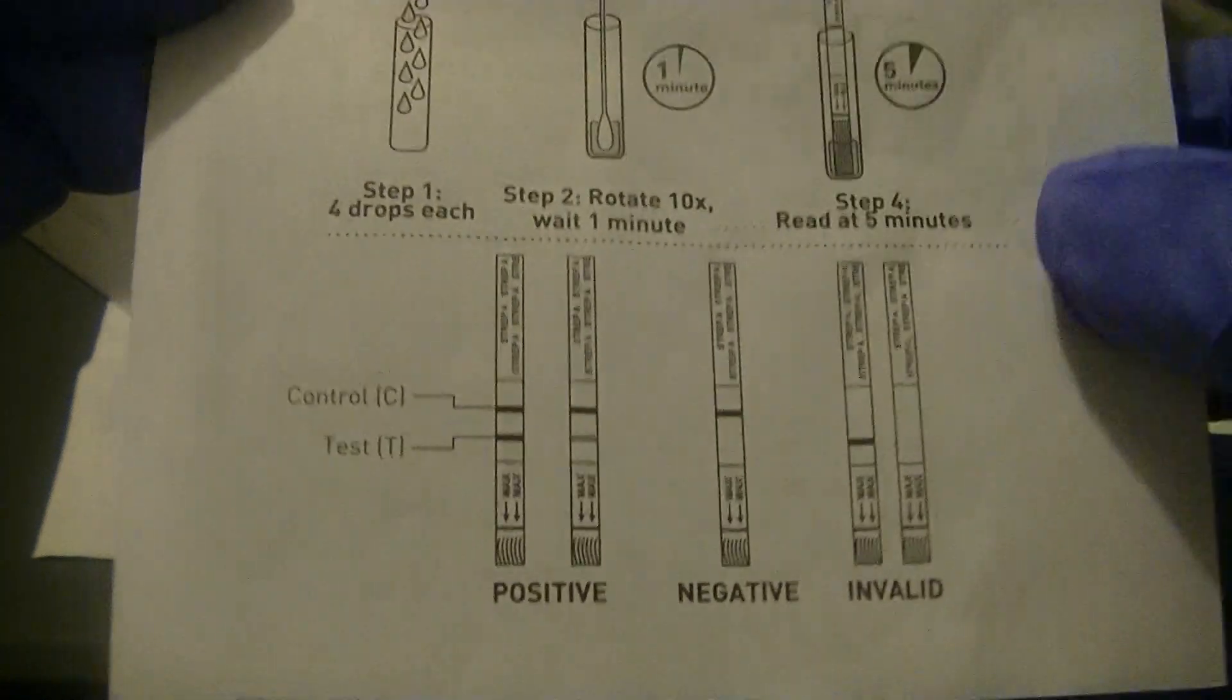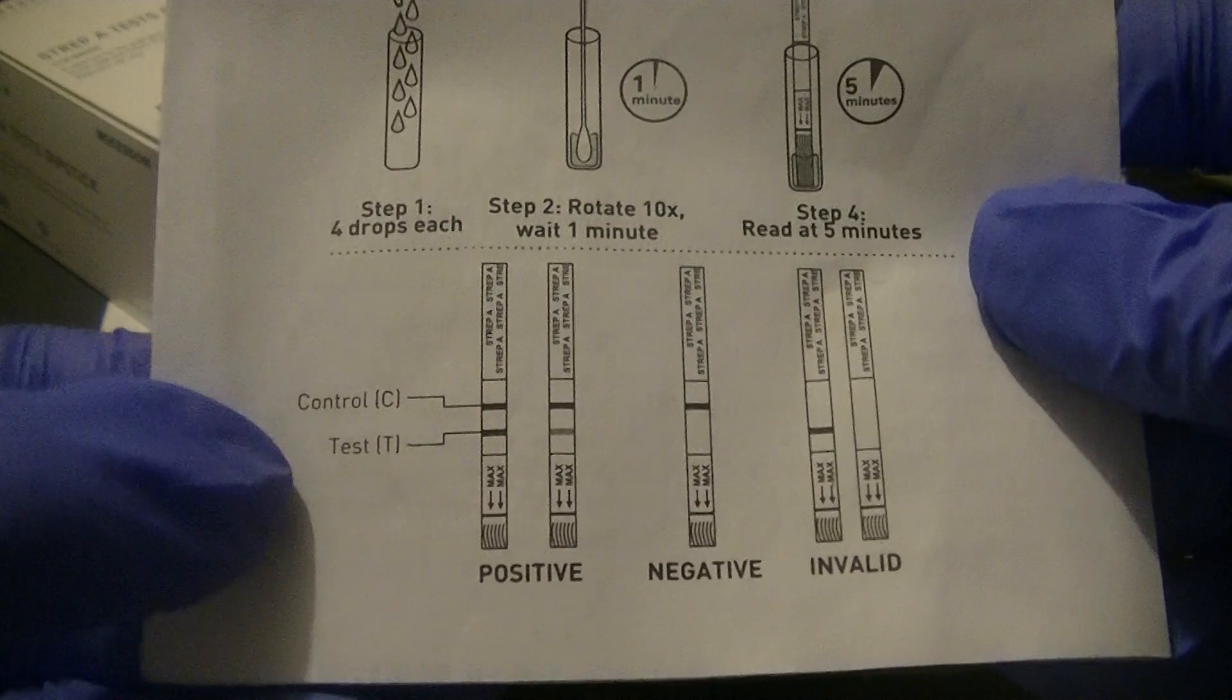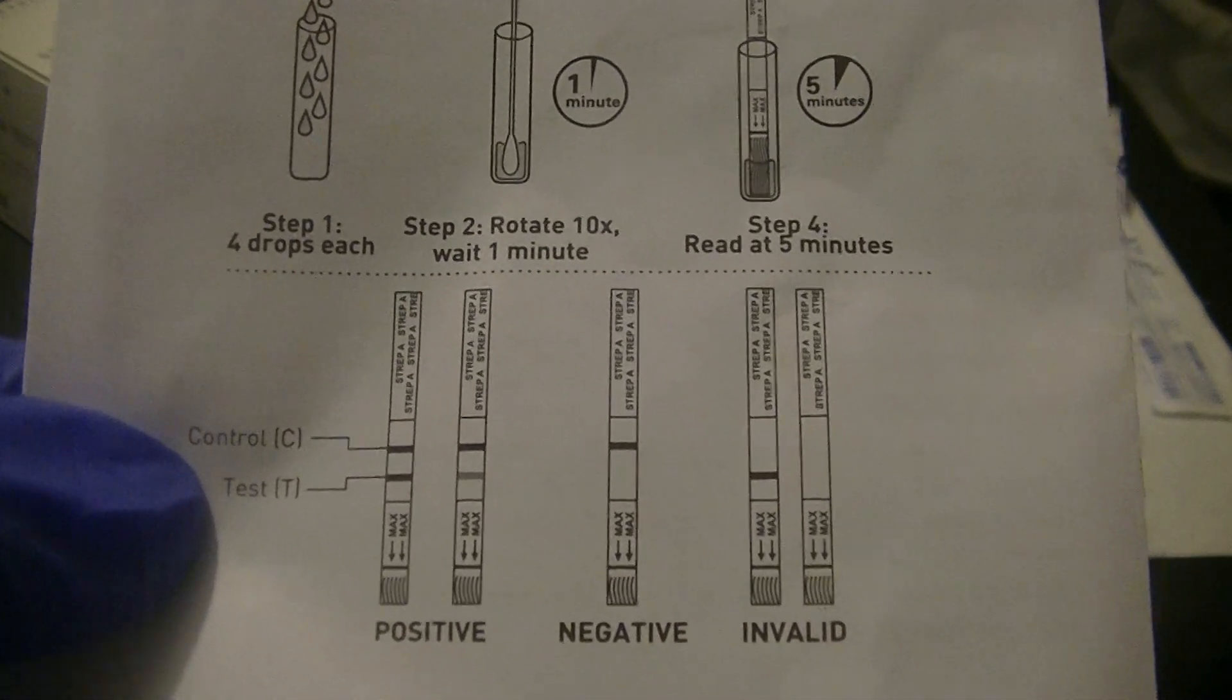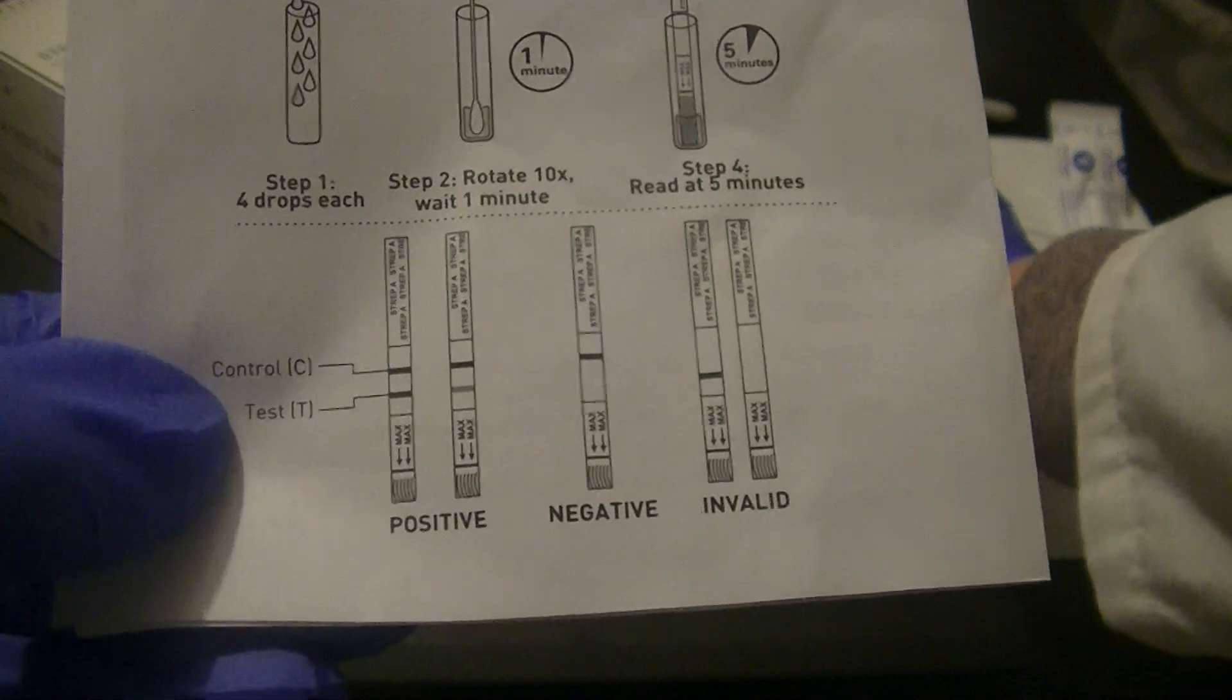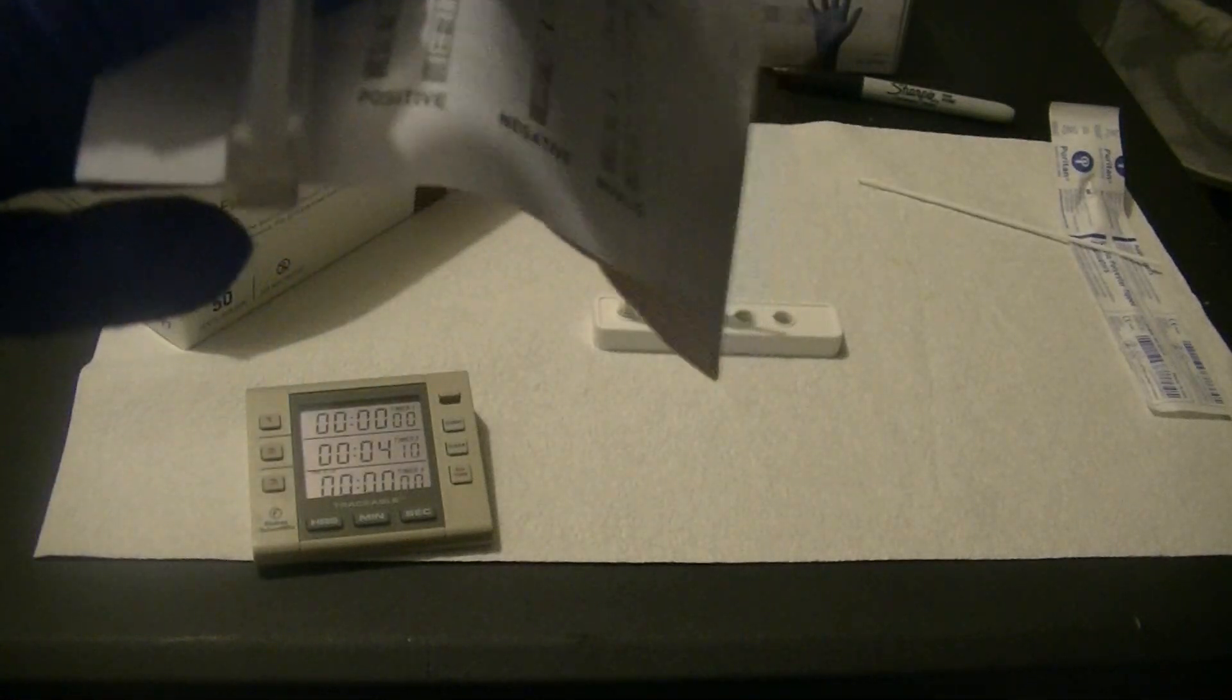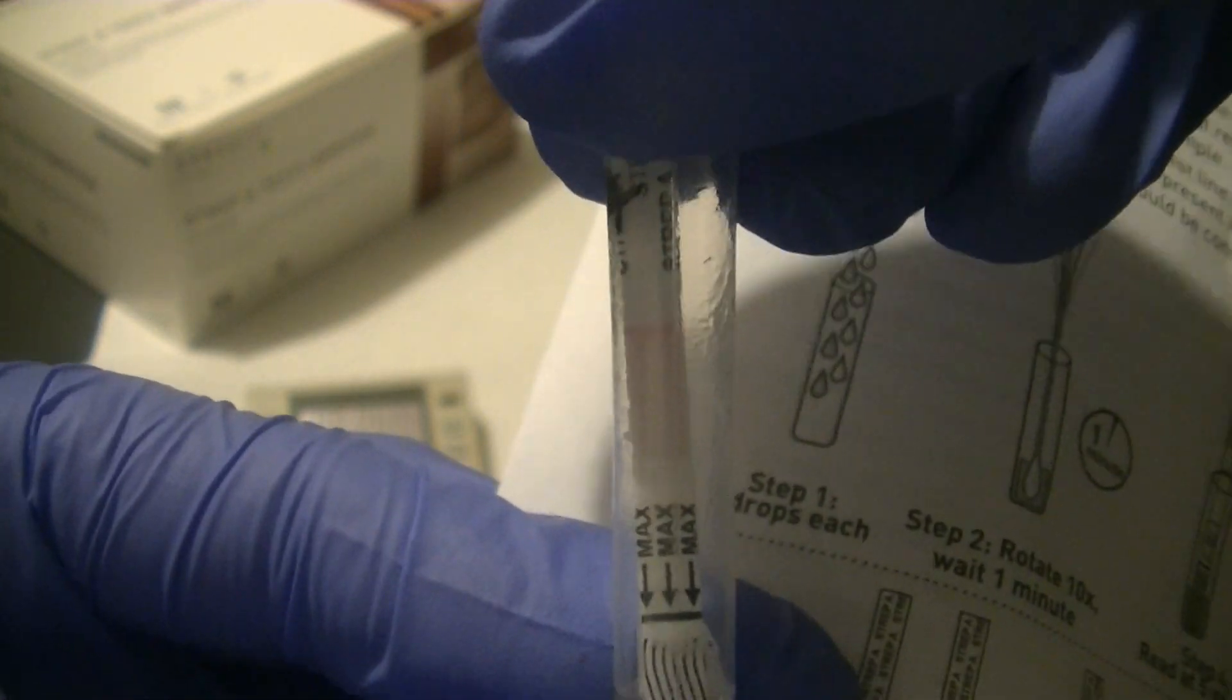If you get a control line, which is the positive line on the top of the reaction area, you can consider your test valid because the sample was able to travel all the way up through the filter paper area. I'm going to grab my patient sample and show you that it has actually already traveled all the way to the top and you can start seeing the control line already.